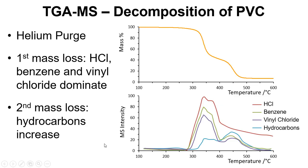If we look at the example of PVC, here we've got the different stages of this decomposing. If we look at the mass spec intensity, this is an arbitrary scale here, we can see that the first step is really dominated with HCl, benzene and vinyl chloride being lost. Whereas the second peak, the hydrocarbons being lost starts to increase.